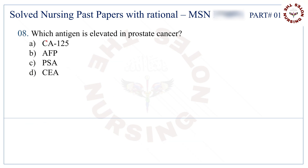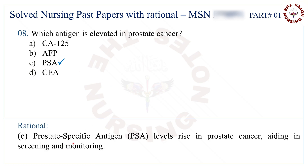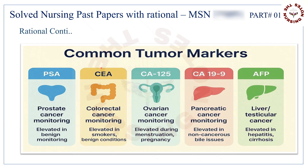Question number 8: Which antigen is elevated in prostate cancer? The correct answer is C — PSA. These are the most common tumor markers; elevation of any of them may indicate cancer in a specific part of the body.